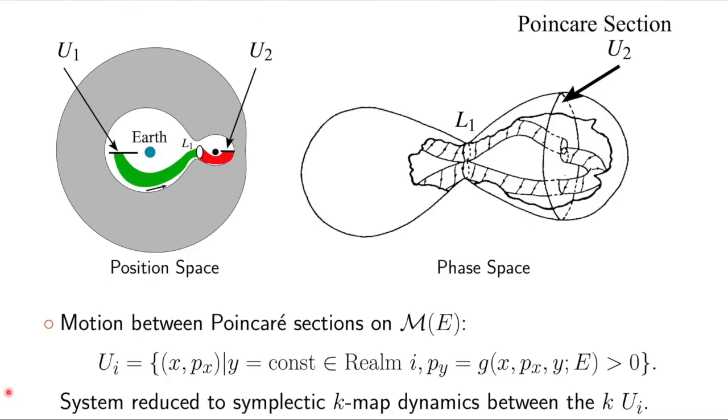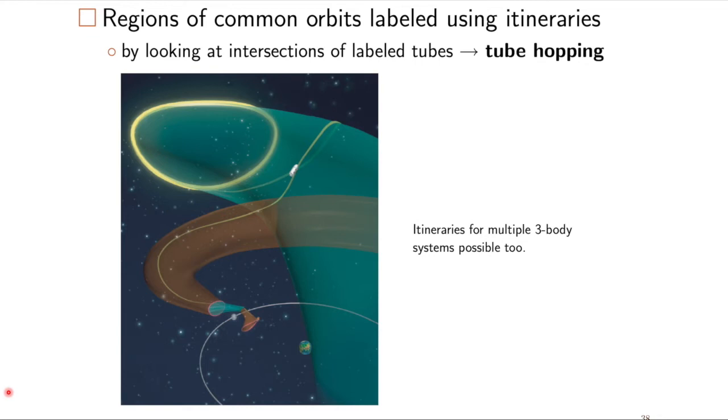The way that we usually compute them is we use the method of a Poincaré surface of section. So we take a slice of the energy surface that tubes intersect, usually more than one tube, and see how they connect up. When there are regions that have a common behavior, we can label those using itineraries. And often this is done by looking on Poincaré surfaces of section where tubes intersect from either the same system or more than one system.